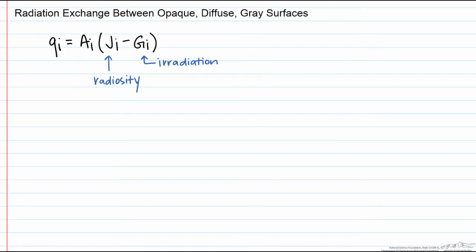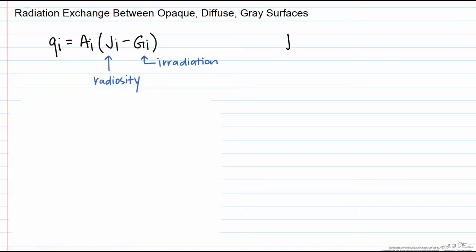For an opaque diffuse gray surface our radiosity is equal to the emissive power plus the reflective irradiation since that's the only part of G that leaves the surface.